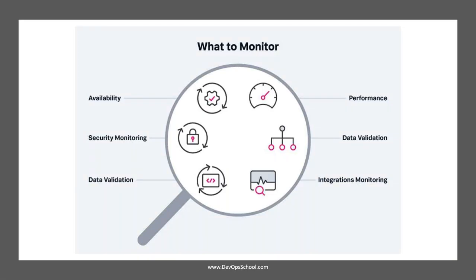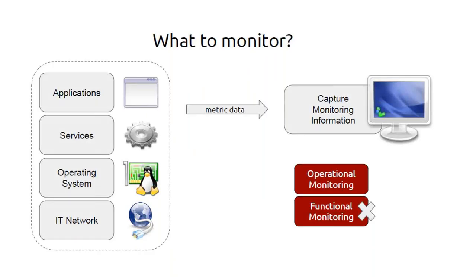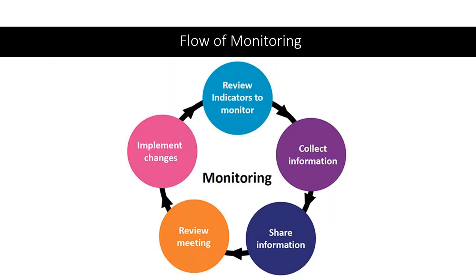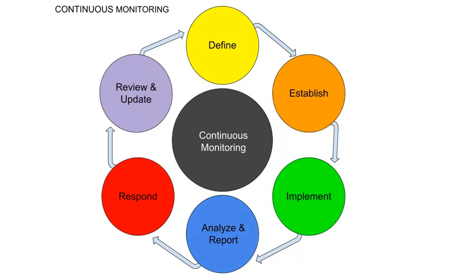You want to monitor availability, performance, data validation, security monitoring, and integration. The flow of monitoring: you collect information, share it, review metrics, implement changes, and review indicators. For continuous monitoring: define what to monitor, establish, implement, analyze, report, respond, and update — that's called continuous monitoring.